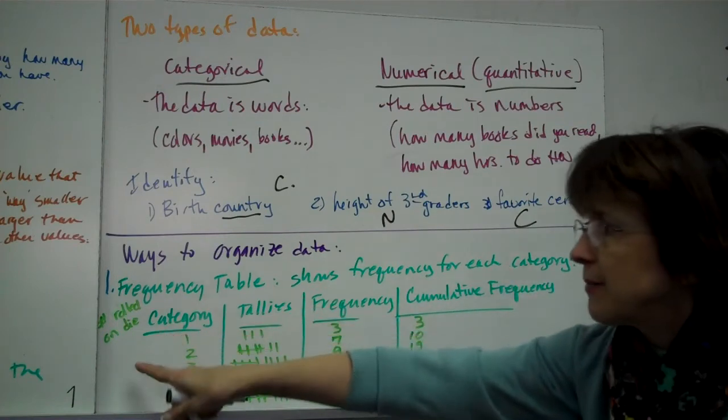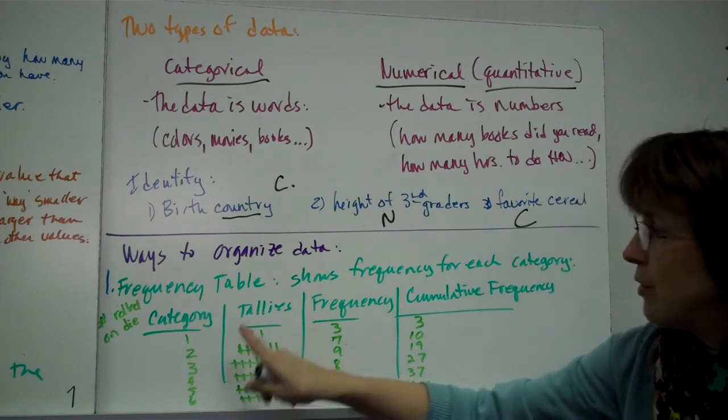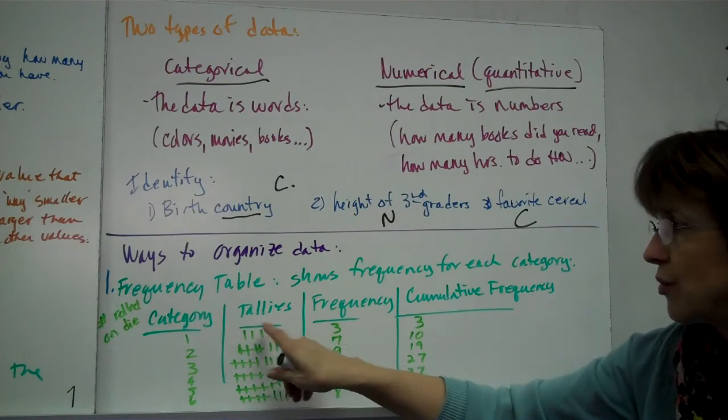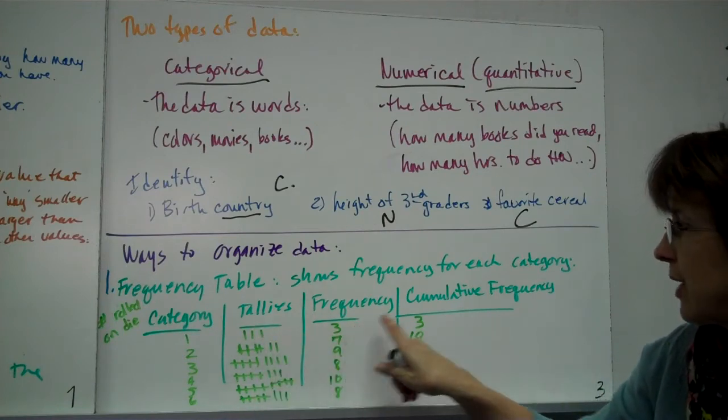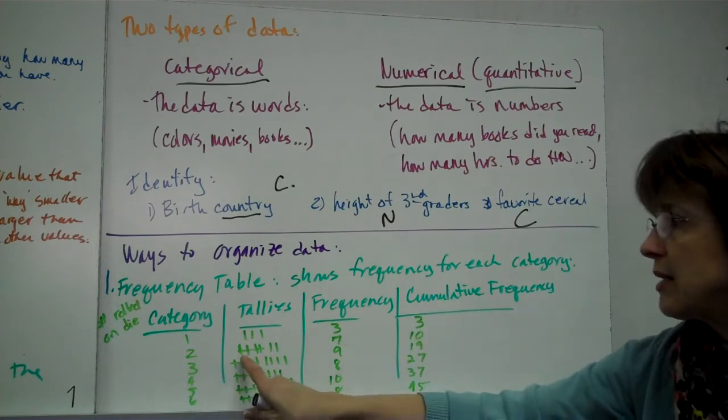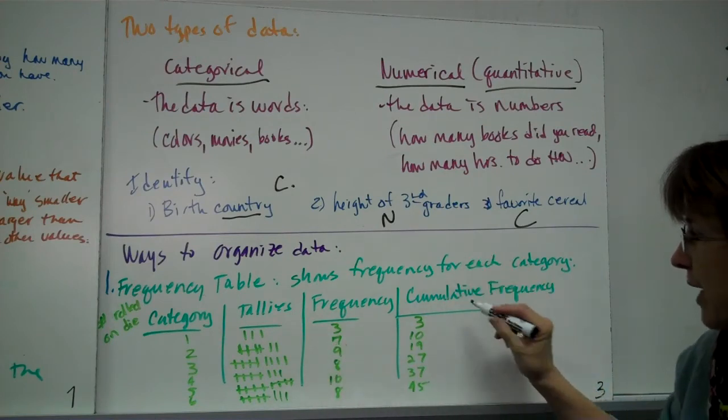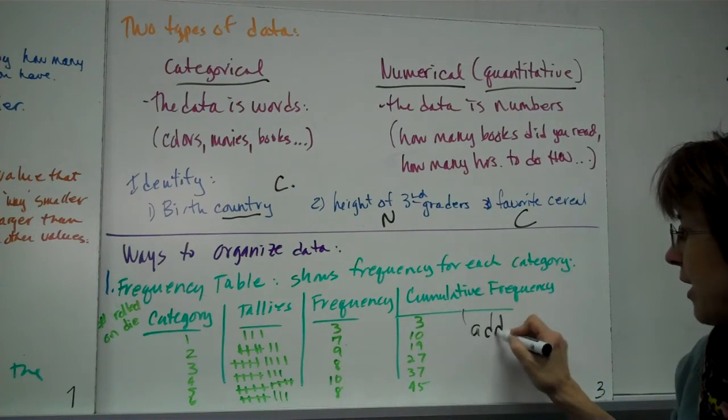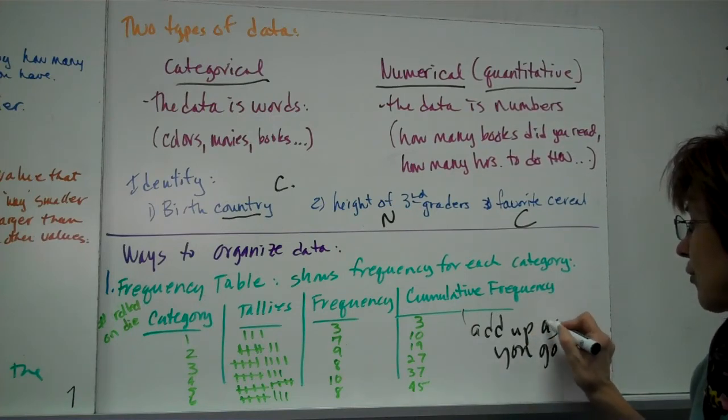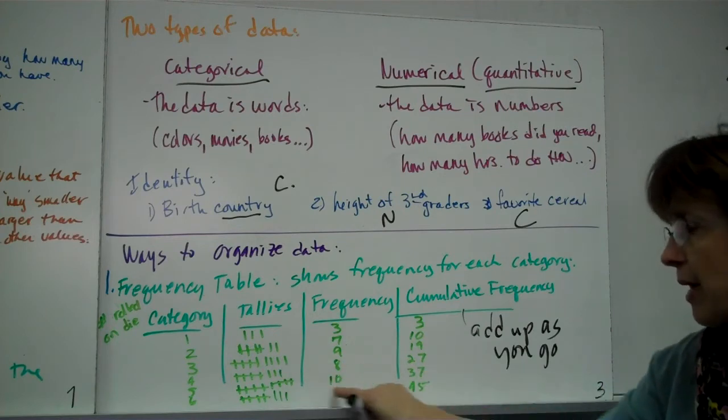So supposing I'm rolling a dice, and I have, the only results are going to be one through six, right? Well, if I do it 45 times, I tally it all up. Supposing I hit, I rolled one three times. You mark three tallies. You put a three in the frequency, and three in the cumulative frequency. All right. Number two, I did it seven times, so I put seven here. But the cumulative frequency, you add up as you go. You add up as you go. That's what the frequency, the cumulative frequency is. And then a three, I did it nine times, so I add that. I keep going, keep adding, keep adding.